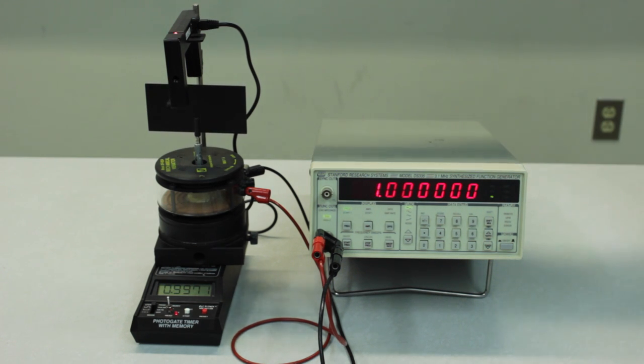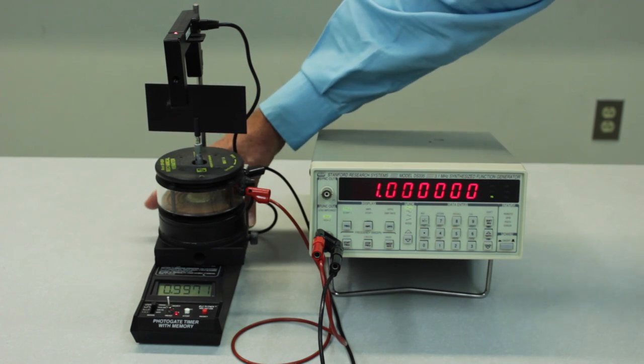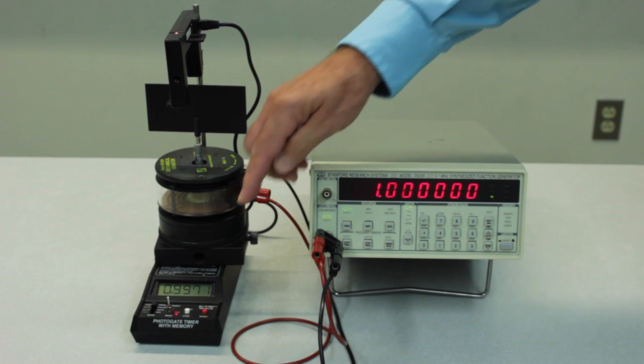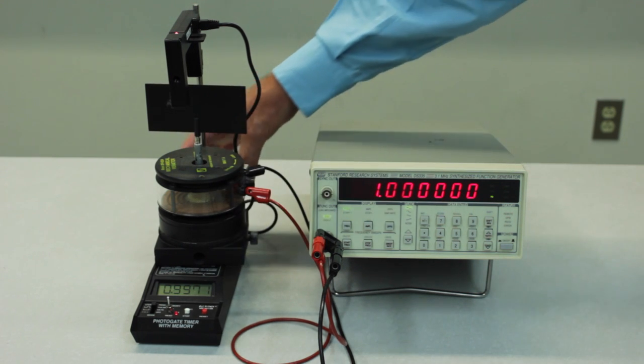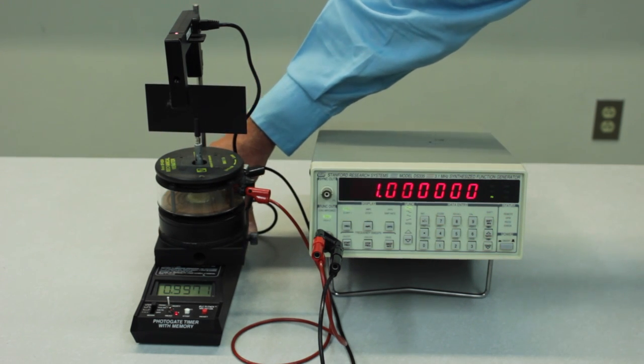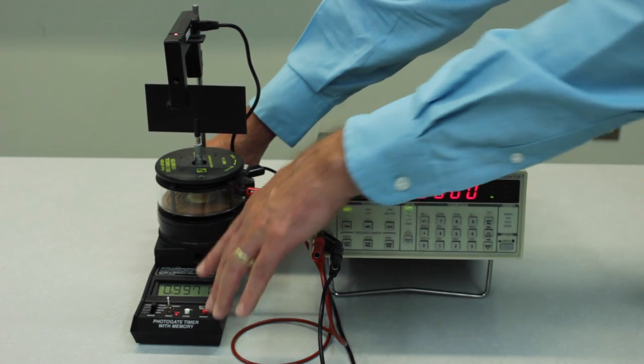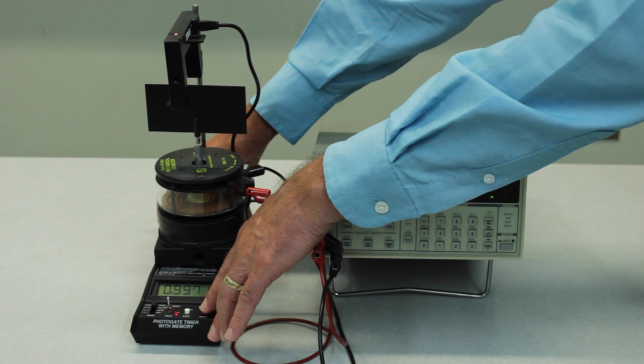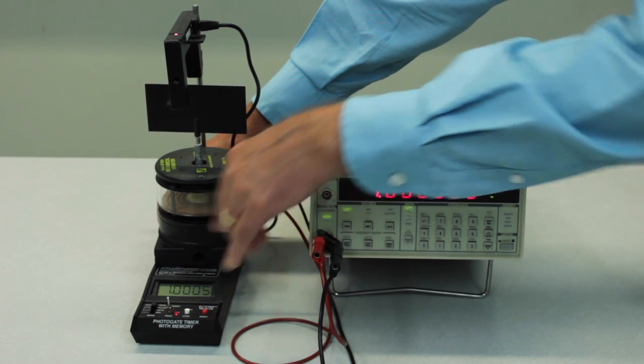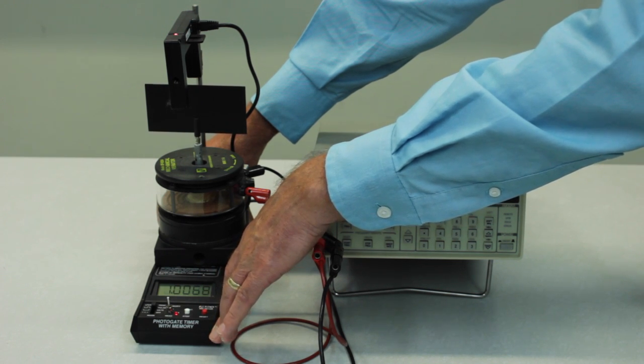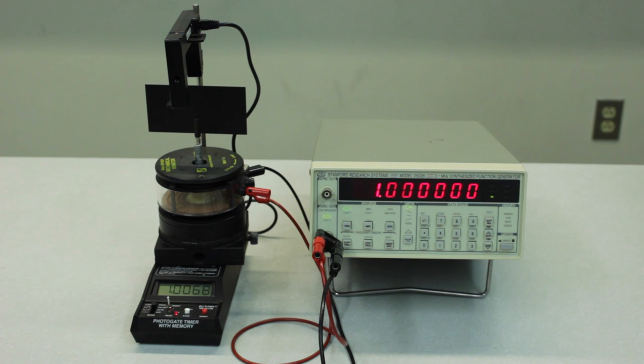One thing to note about the apparatus is that the timer might be a little bit unstable on the tabletop. So that might introduce extra uncertainty if the photo gate jiggles a little bit when you press the reset button. To kind of minimize that you might want to hold the timer base down tight onto the table and press the reset button carefully. And that will tend to be a little more reproducible to keep it from bouncing around.